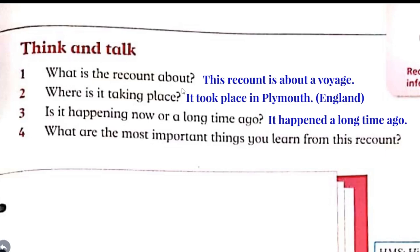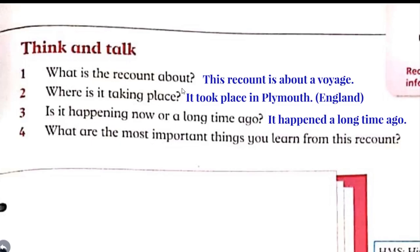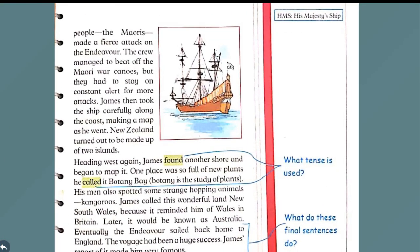We are living in 2020 and this voyage took place in 1768, so this is really a very long time. Question number 4 is: what are the most important things you learned from this lesson? Write the answer of this question by yourself. Now you can see here two words are highlighted: 'found' and 'called', written in the second form of verb. In tenses, we use the second form of verb in only one tense, and that is simple past tense.